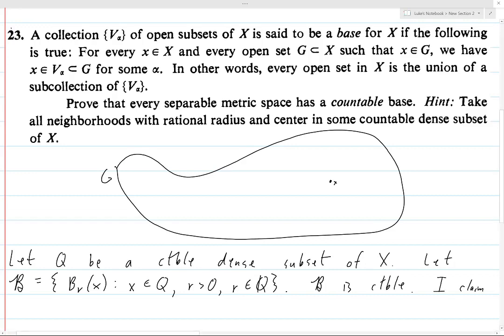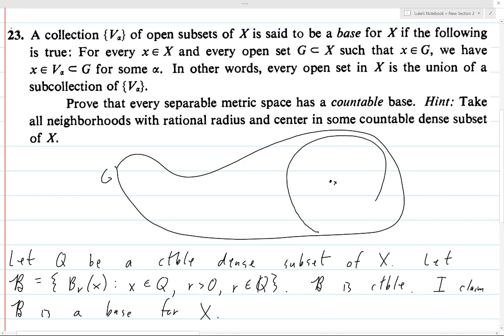So the claim is that B is also a base for X. The way we're going to do this is with the picture argument. We're going to choose any point x in the space and any open set G which contains x. We know that the topology in a metric space is generated by open balls, so you can draw some open ball around x which is contained in G. We'll say this is a ball of radius r centered at x.